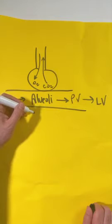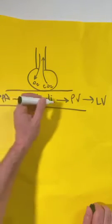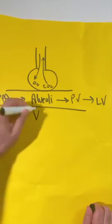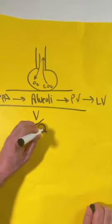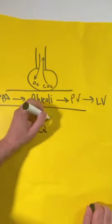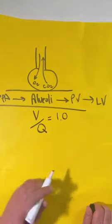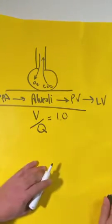Now in a perfect world, the amount of ventilation should equal the amount of perfusion. So the amount of ventilation happening at this alveolar unit should be equal to the perfusion, or Q, at this unit, and that should be one. Of course, the world is not perfect, but we'll talk about that in a little bit.